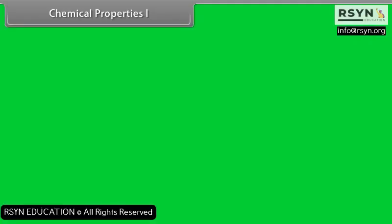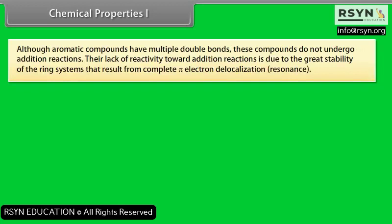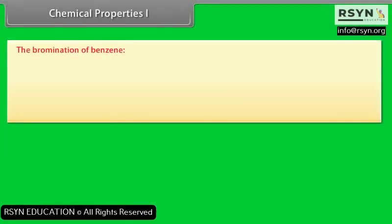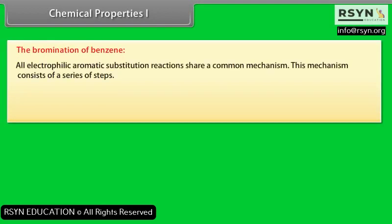Chemical properties. Although aromatic compounds have multiple double bonds, they do not undergo addition reactions. Their lack of reactivity toward addition reactions is due to the great stability of the ring system resulting from complete pi electron delocalization (resonance). Aromatic compounds react by electrophilic aromatic substitution reactions, in which the aromaticity of the ring system is preserved. For example, benzene reacts with bromine to form bromobenzene — the bromination of benzene. All electrophilic aromatic substitution reactions share a common mechanism.